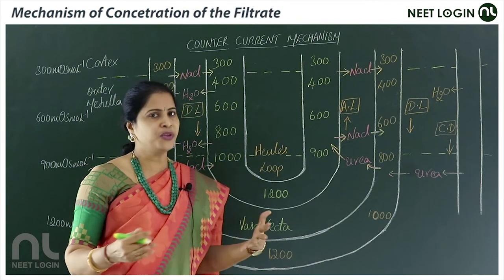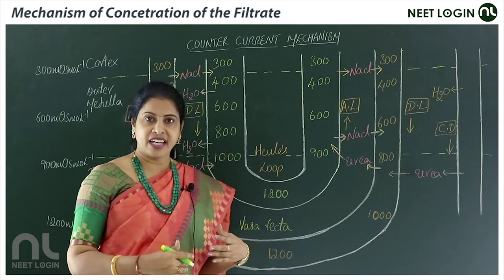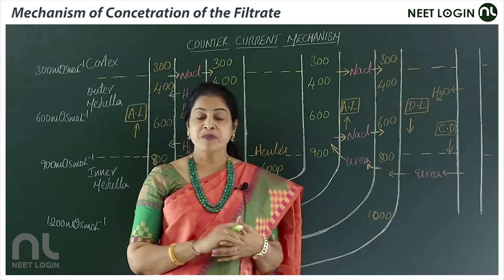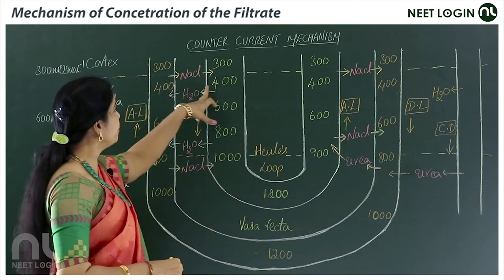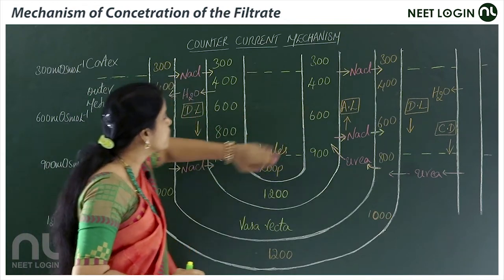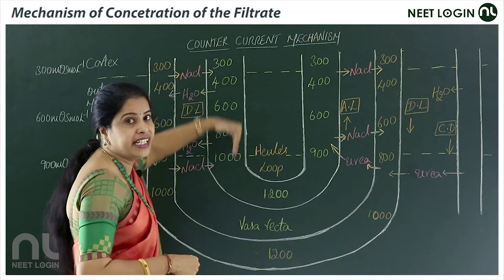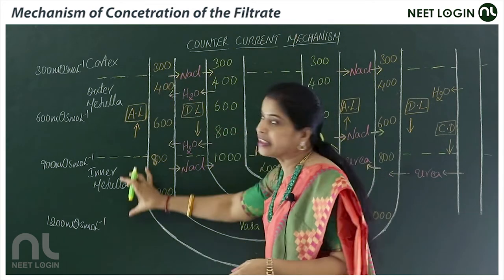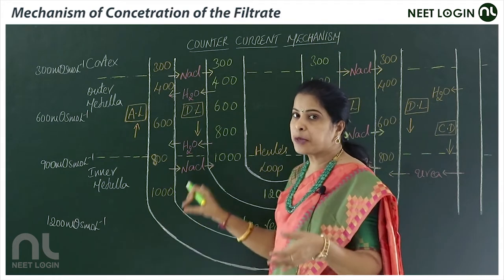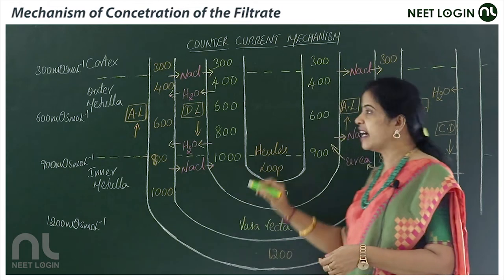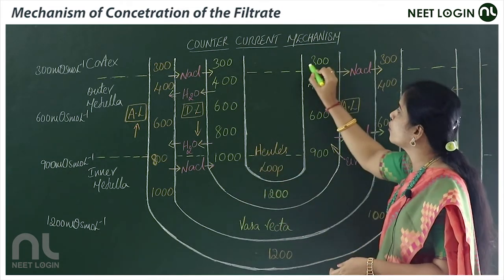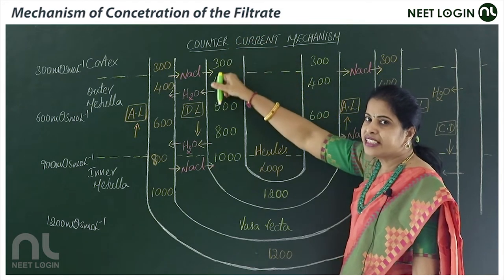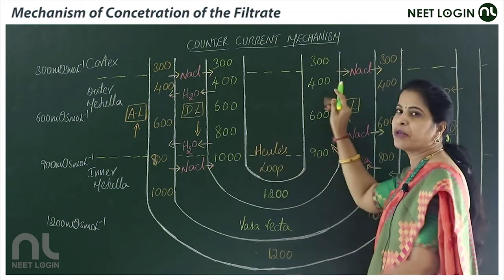Counter current mechanism — 'counter' means opposite. Here in the adjacent limbs of the loop of Henle, the flow is in opposite directions: the descending limb flows downward and the ascending limb flows upward. The cortex region is outer, then outer medulla, then inner medulla. The hairpin turns of the loop are present in the inner medulla. The flow in adjacent limbs of Henle's loop and vasa recta is opposite.